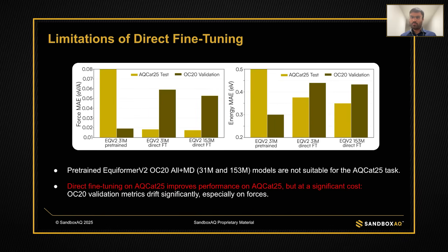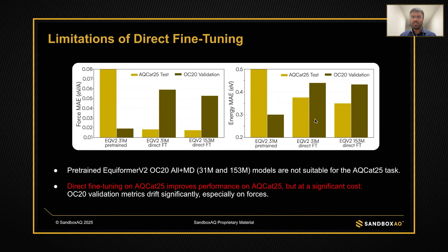Here are some results from direct fine-tuning, the most obvious first choice when trying to build a model using AQCAT25. Looking at mean absolute errors for forces and energies: the pre-trained Equiformer V2 models from OC20 show very high errors on the AQCAT25 test set. When you directly tune on AQCAT25, we considerably improve forces and energies on AQCAT25 data. But there is a significant cost — the OC20 validation metrics drift significantly from the pre-trained model's performance, particularly on forces.